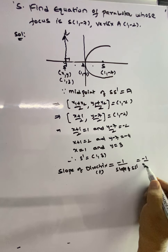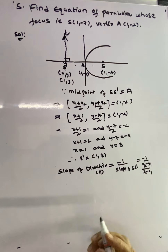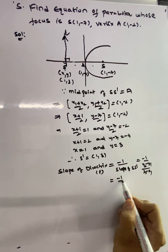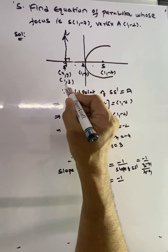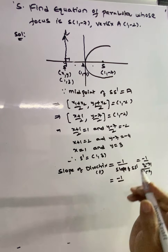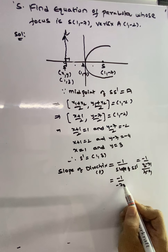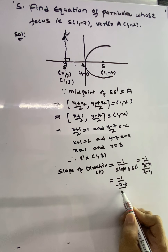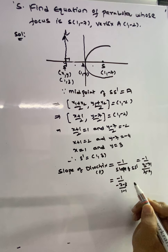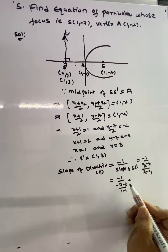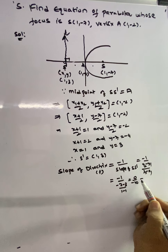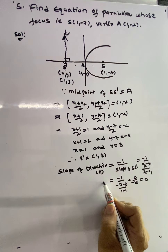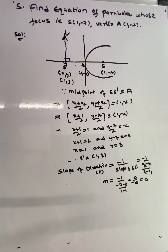Slope of directrix = -1 / (slope of SS'). Using S = (1, -7) and S' = (1, 3): slope of SS' = (-7 - 3)/(1 - 1) = -10/0, which is undefined. So slope of directrix = -1/(undefined) = 0.